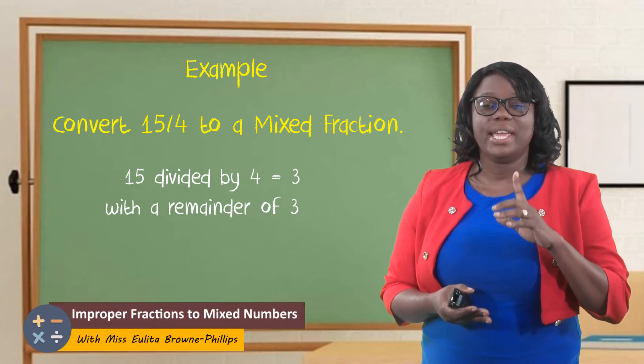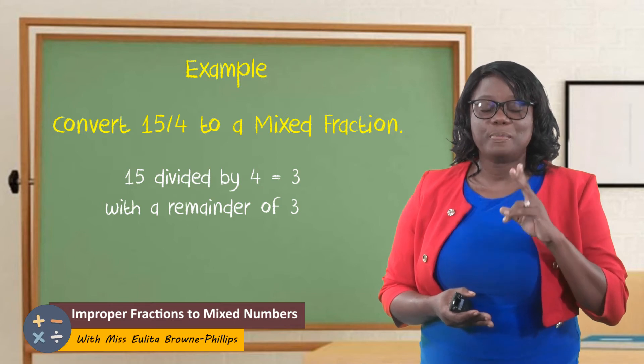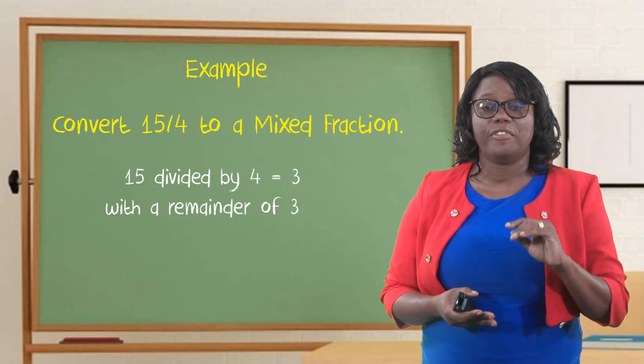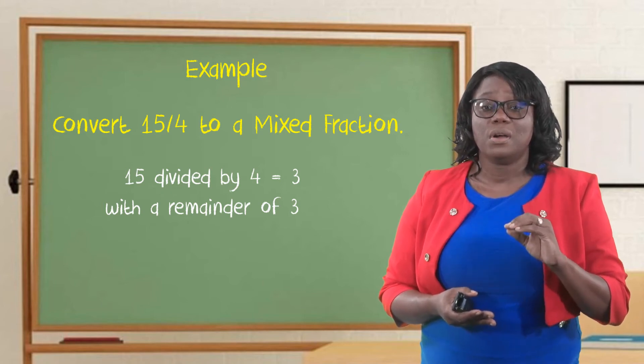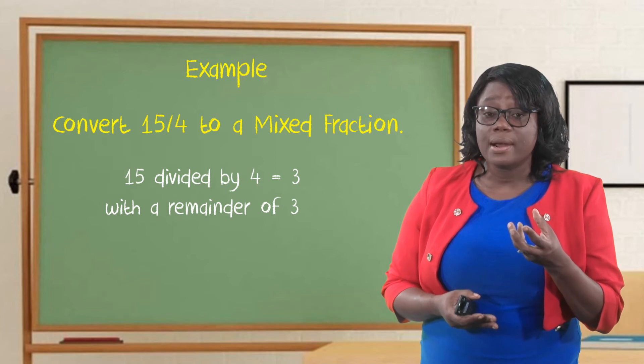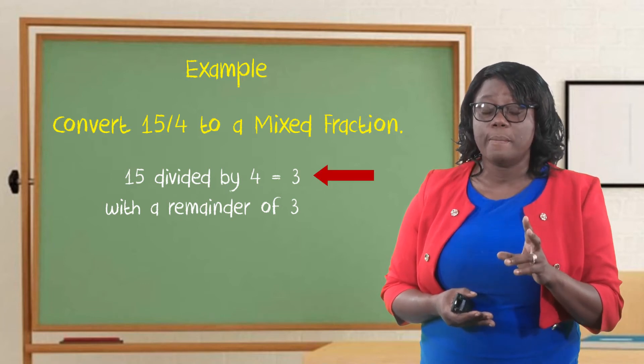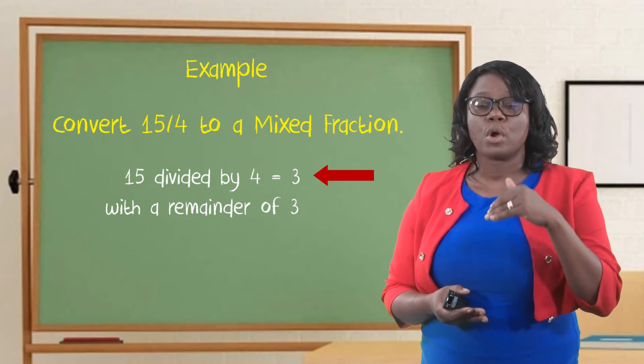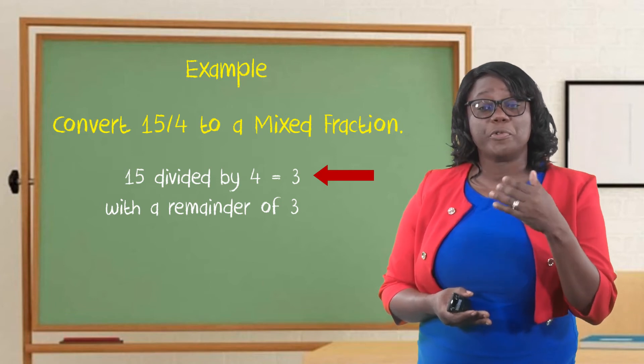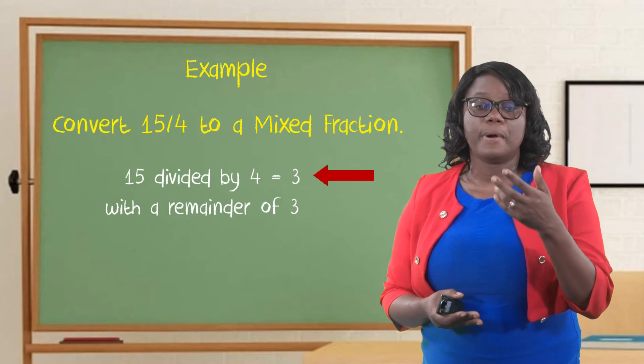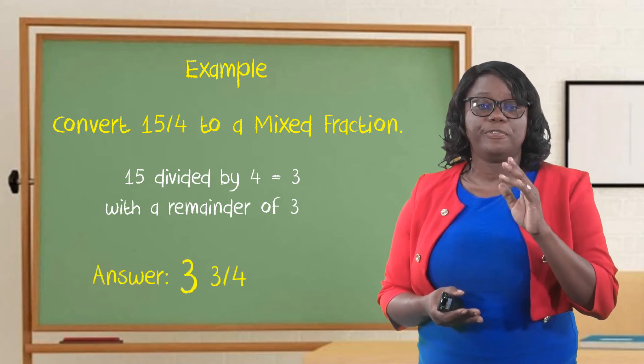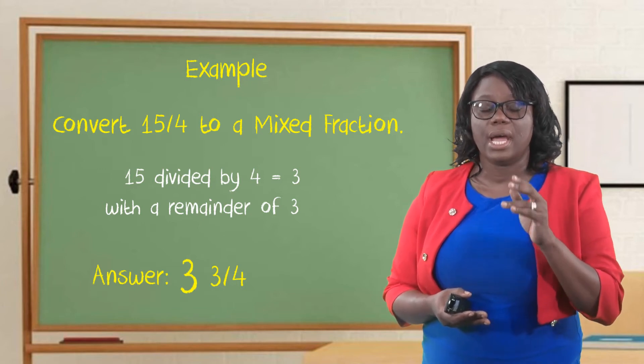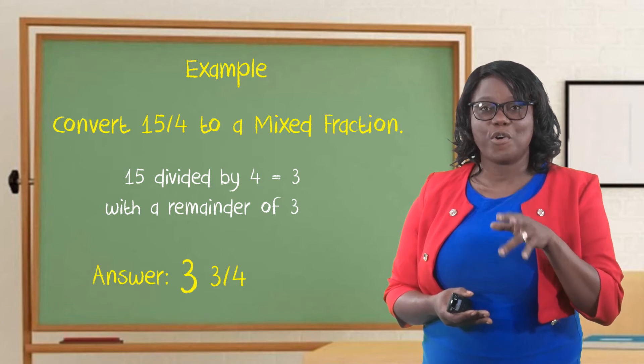Yes, we can get 3 groups of 4 from 15 with a remainder of 3. So, what number is the whole number? 3 is the whole number. 4 times 3 is 12, and 3 more makes 15. Where do we write the remainder? We write the remainder at the top of the denominator. So, 15-fourths converted to a mixed fraction would be 3 and 3-fourths.